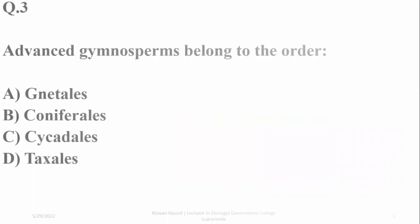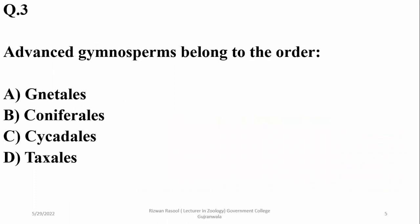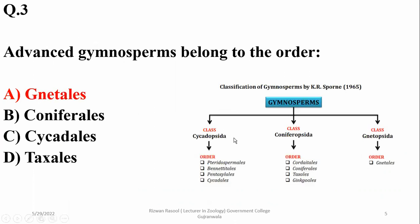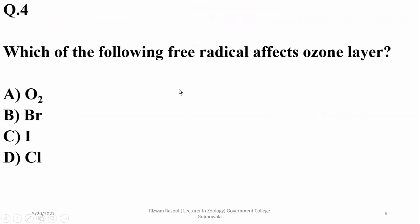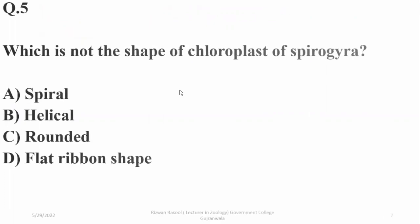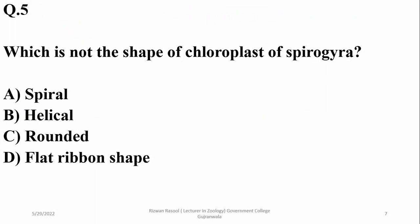Question three was about advanced gymnosperms and which order they belong to. If you look at gymnosperms, they have different orders. Question four was about a radical which affects the ozone layer and is released from chlorofluorocarbons (CFCs).